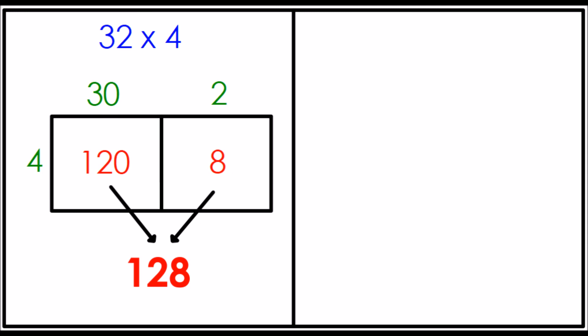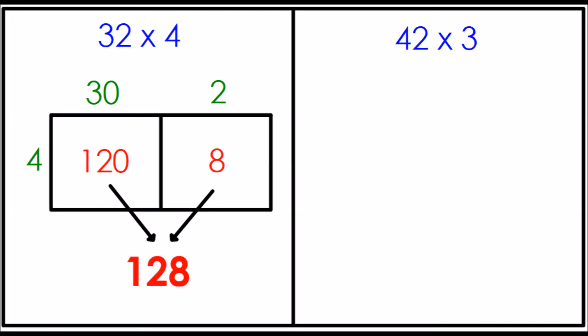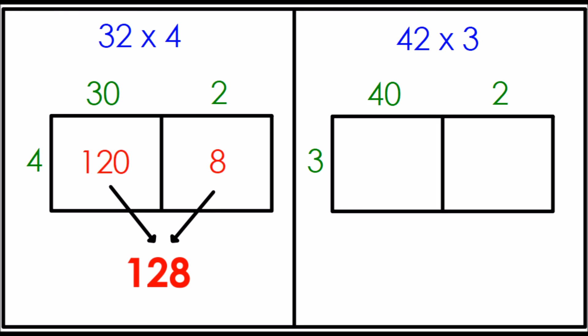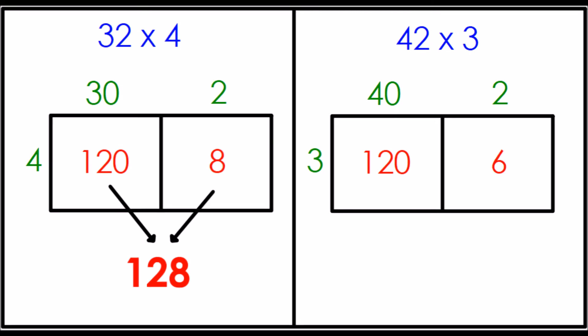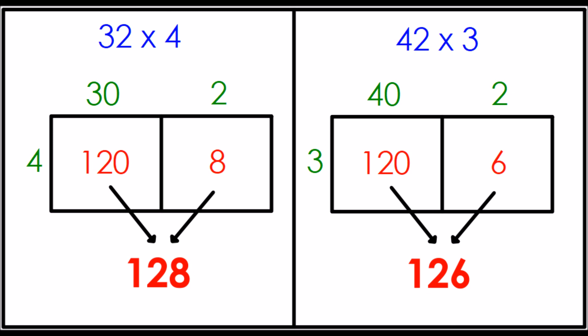30 times four is 120. Two times four is eight. That product is 128. Now on the other side, 42 times three. I'm going to split up 42 into 40 and two. Well, times three. 40 times three is 120. Two times three is six. That product is 126. Oh man, those are only two apart. So they're very similar sizes, but 32 times four equals 128. That is the largest possible product that we can make, 128.